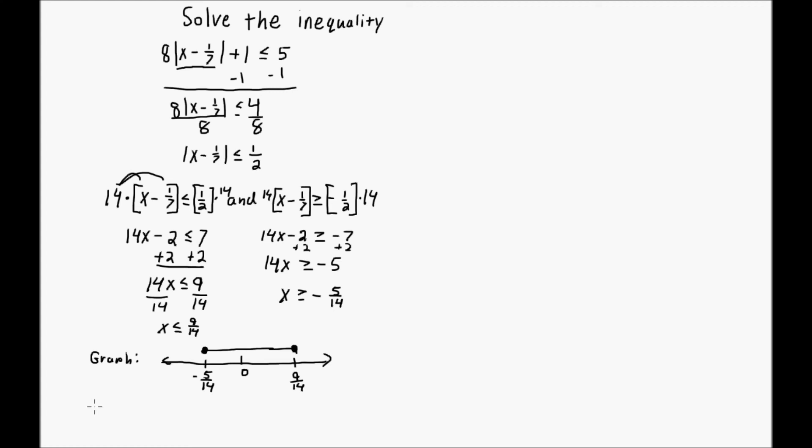All right, so now I need to get my set builder notation. Open curly brace x, such that, and let's just go right along the graph here. Notice that there's a bar in between, so I know I'm going to write my x in between here. So start with the lowest number, negative 5 over 14. And then it's less than or equal to x, which is less than or equal to 9 over 14.